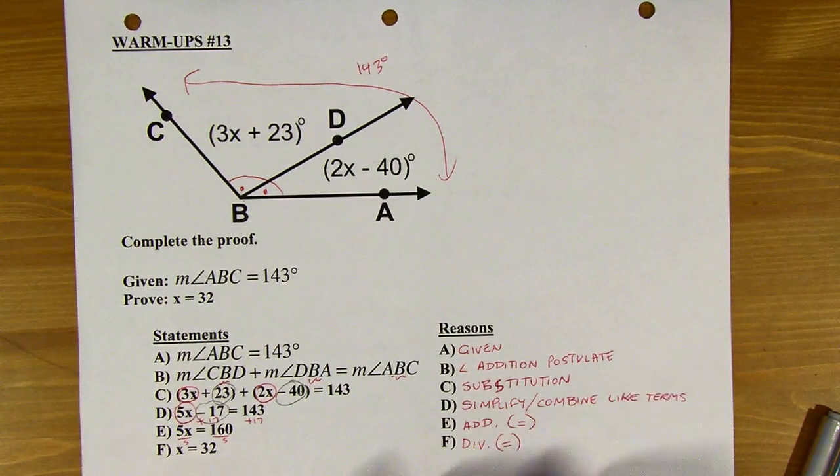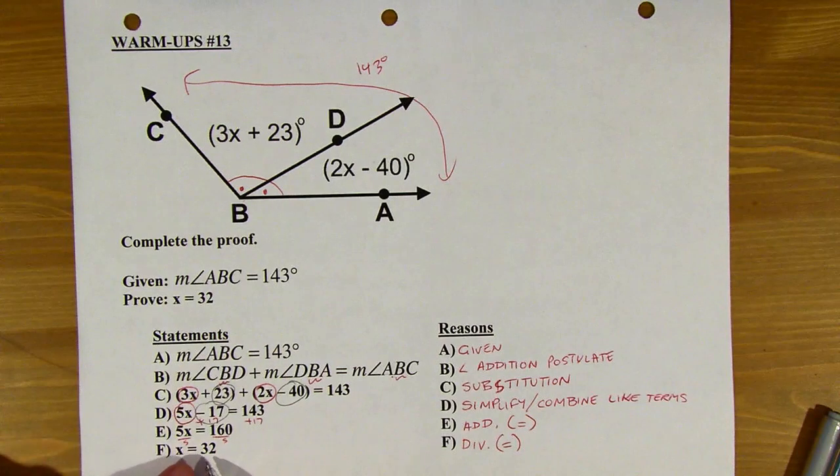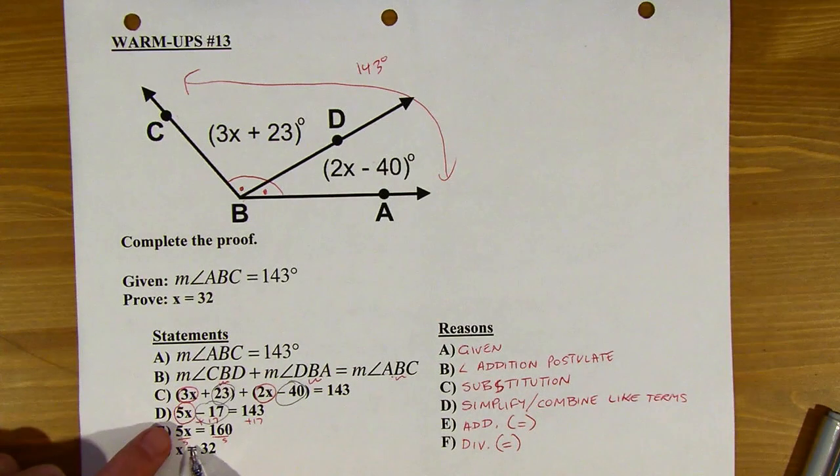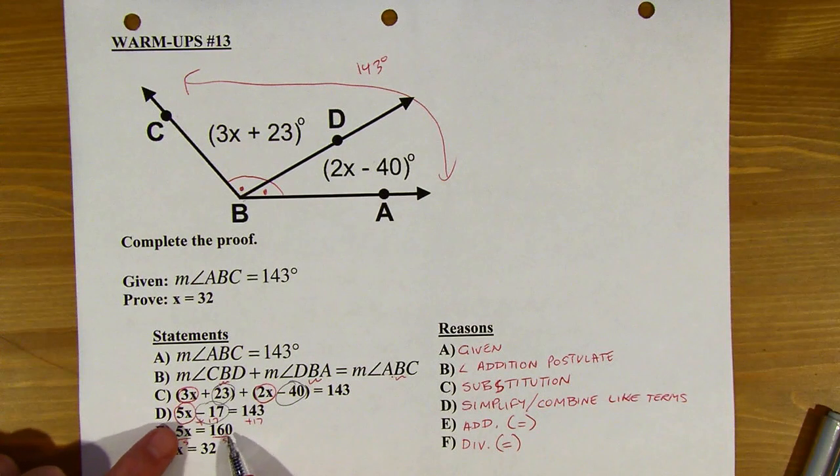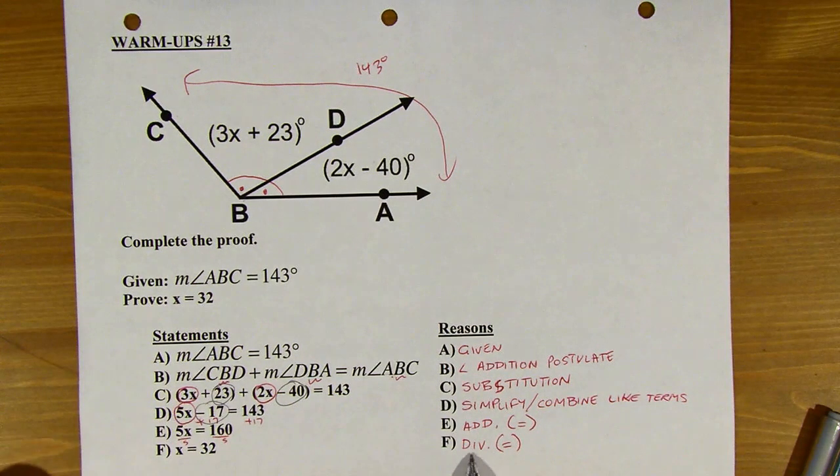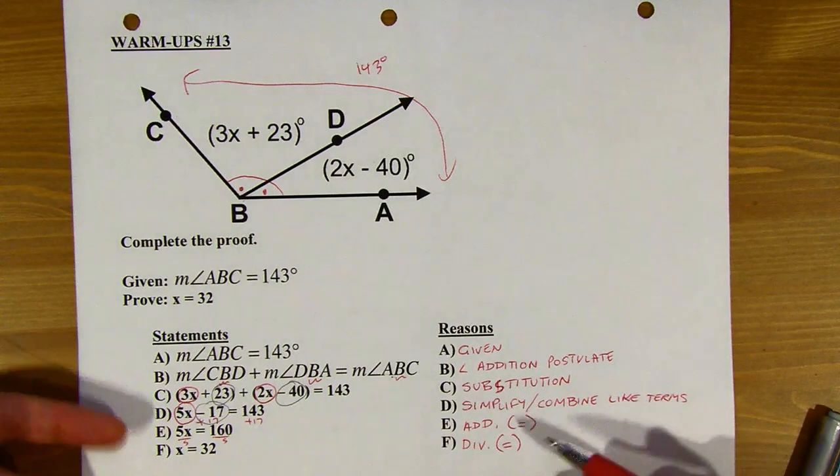And some people might say multiplication. Usually people will say division here, but you can make an argument, well, I multiplied by one-fifth on both sides. Well, sure. If you multiply by one-fifth, that's the same as dividing by five. So technically, anytime there's division, you could also use multiplication and vice versa.